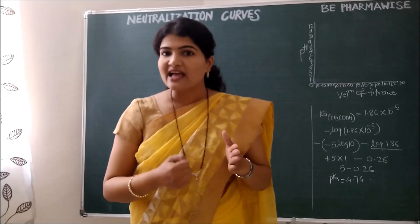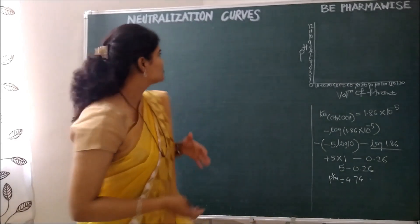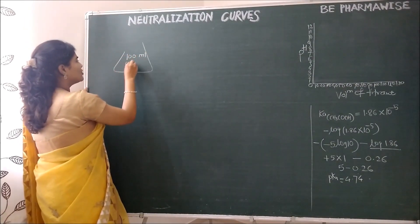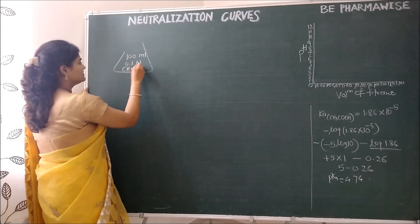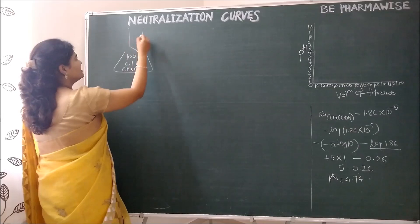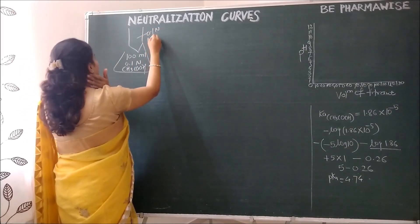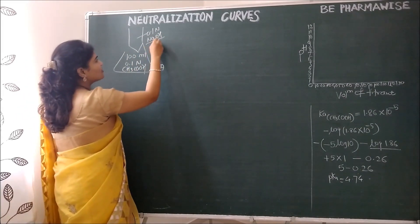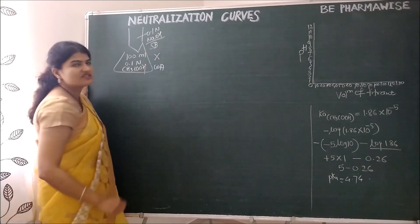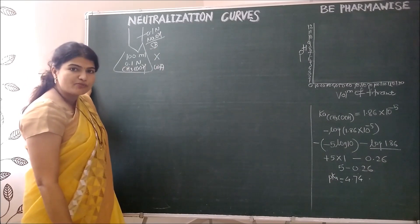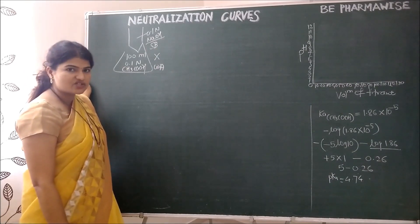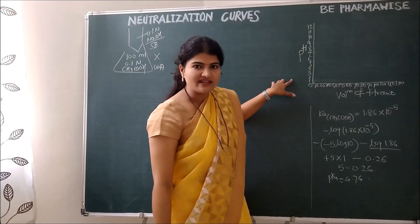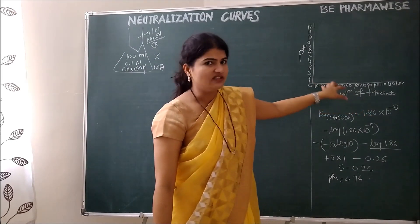Here I am taking the example of acetic acid versus NaOH titration. In the conical flask I will take 100 ml of 0.1 normal acetic acid, and in the burette I will take 0.1 normal NaOH. As you know, NaOH is a strong base, so this titration is a weak acid versus strong base kind of titration. We will also plot the neutralization curve, taking pH values on the y-axis and volume of titrant added on the x-axis.